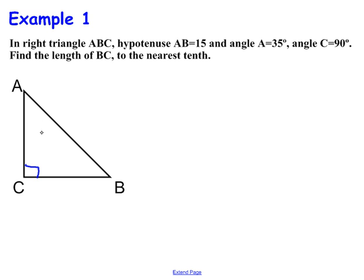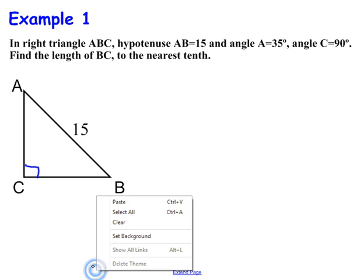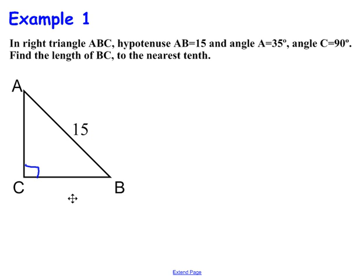It says AB is equal to 15, so I'm going to write 15 for AB. And it says that angle A is 35 degrees, so I'm going to write 35 degrees in there. Find the length of BC. So I'm going to let BC equal X. So I'm going to say this is X. It's unknown.